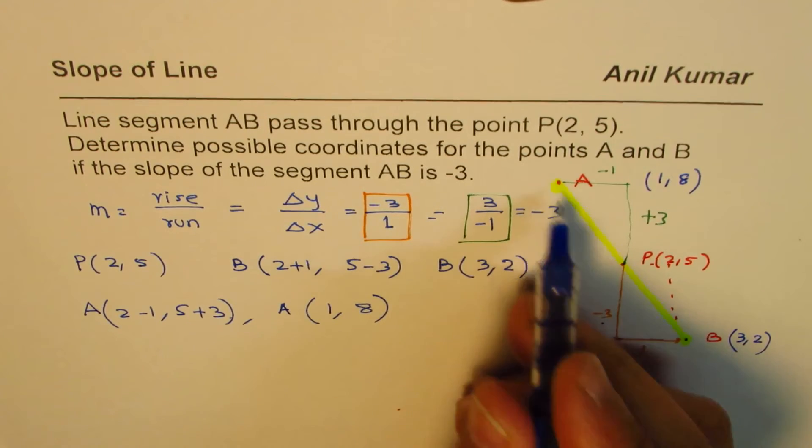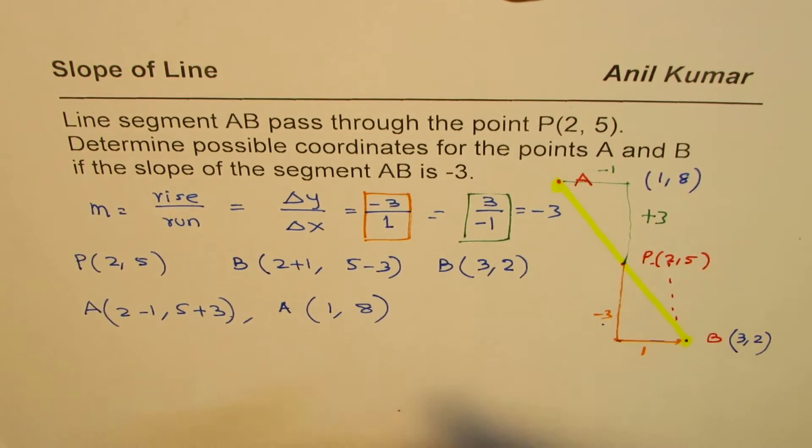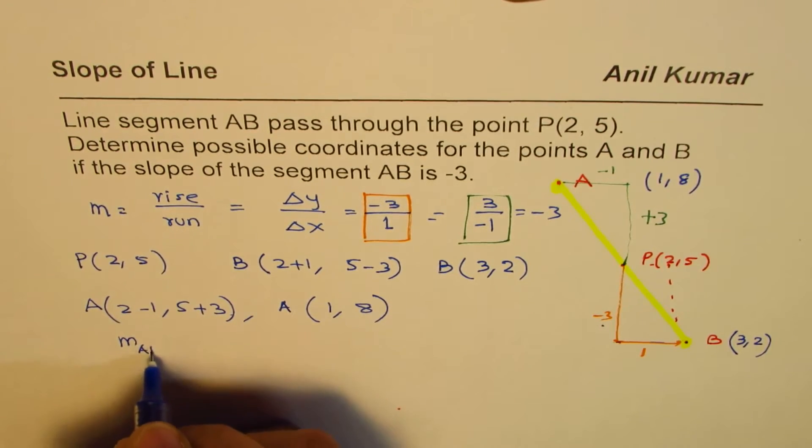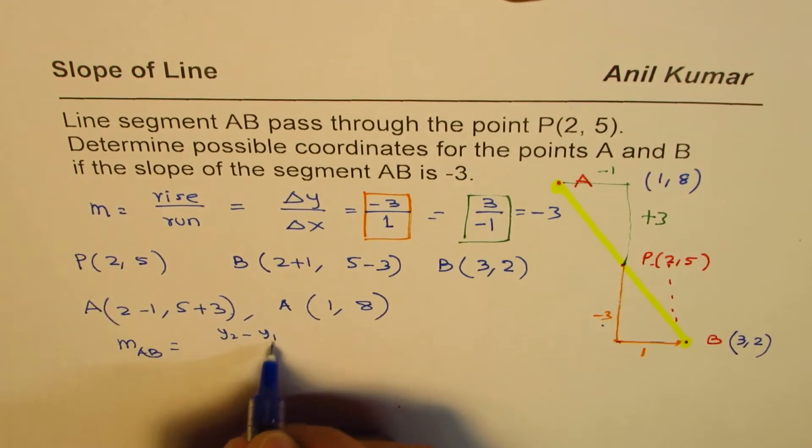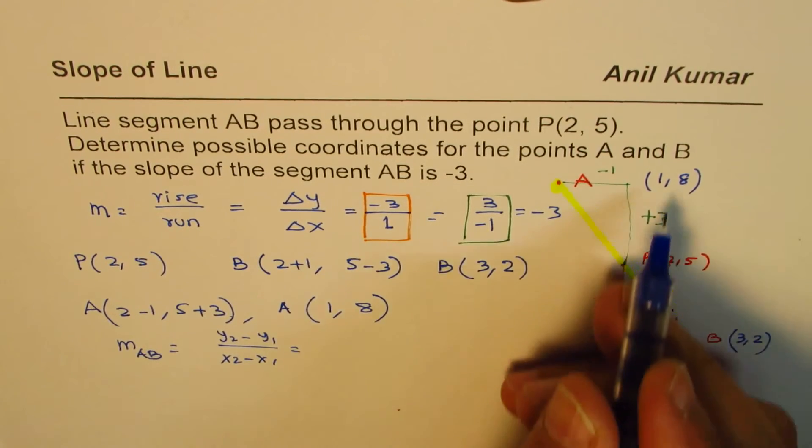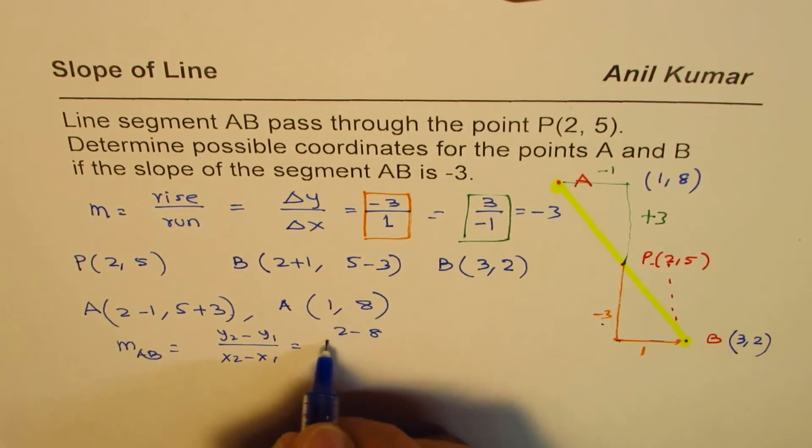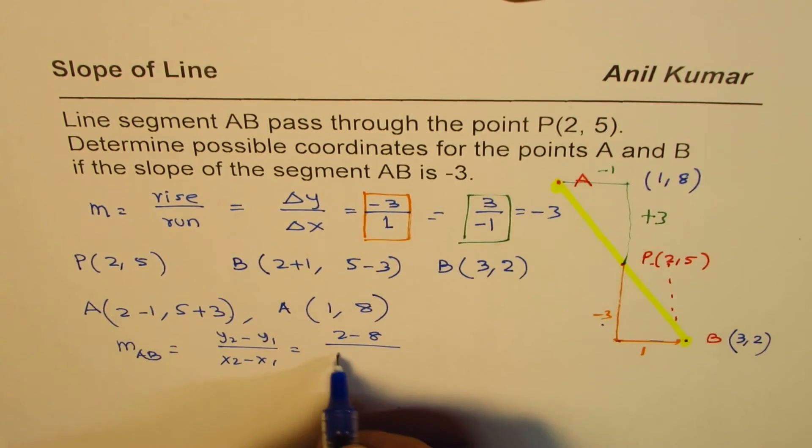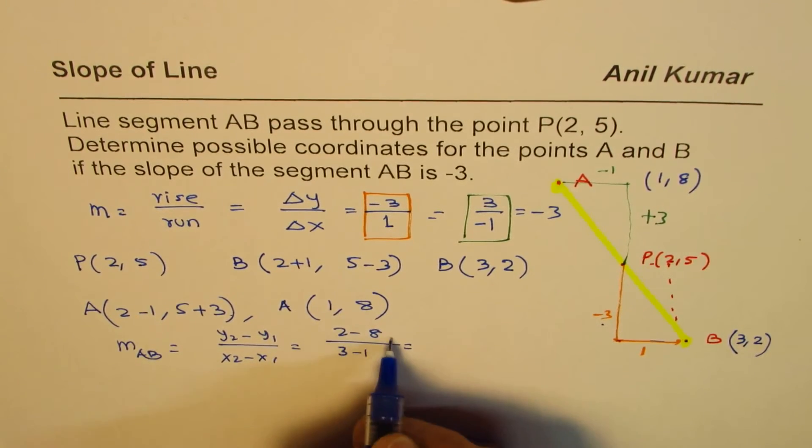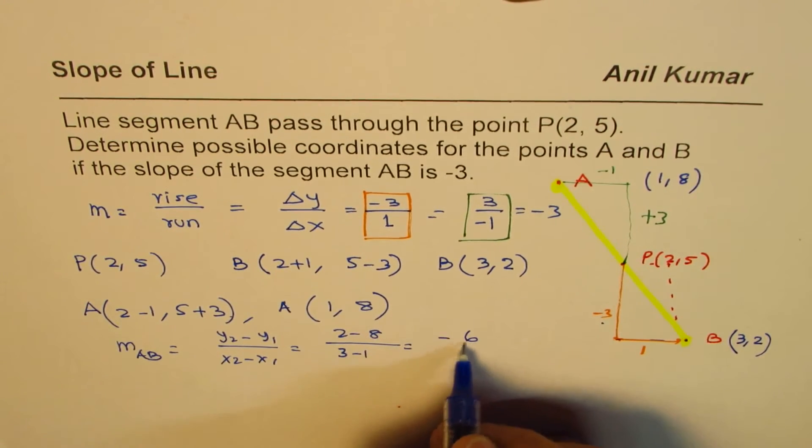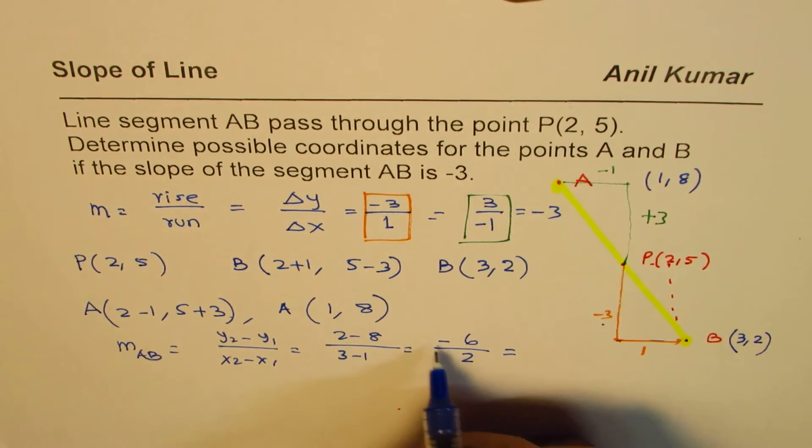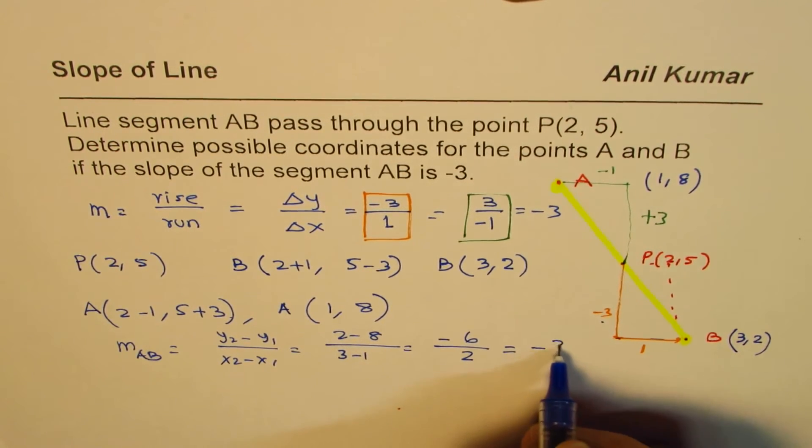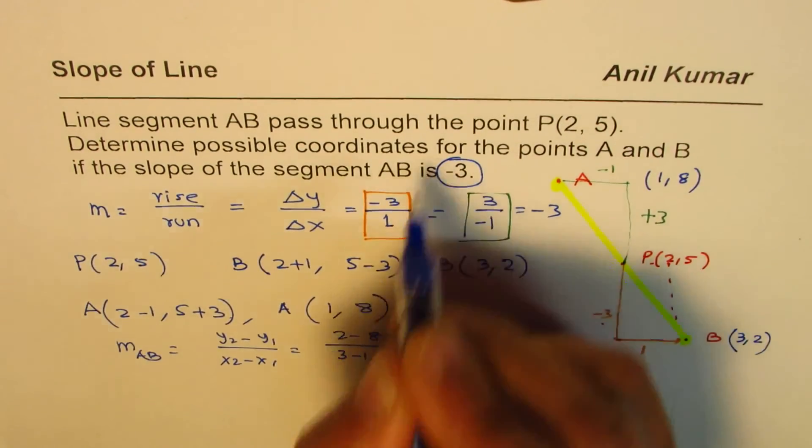Now, definitely, these are the two endpoints of segment AB. Let us find the slope of AB now. Let's do the reverse calculation, which is (y₂ - y₁)/(x₂ - x₁). So 2 minus 8 divided by 3 minus 1. 2 minus 8 is -6 and 3 minus 1 is 2. And that gives us -6 divided by 2 as -3. So it's perfectly what we wanted.